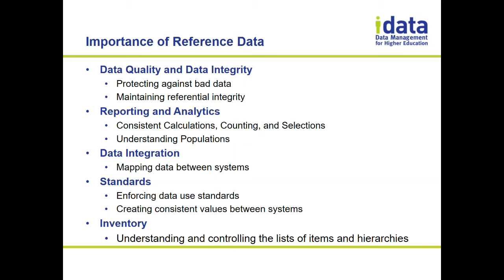The next big area is standards. To make life easier — let's say you purchased Slate as your CRM and you have Banner as your SIS — when you define all the code values in Slate for things like programs or application statuses, ideally you want to use the same codes so that you have standards across your institution. To do that, you need a central repository that explains what those standards are. Otherwise, someone ends up going into Banner and clicking dropdowns or asking IT to produce a report of those values rather than consulting a master list.